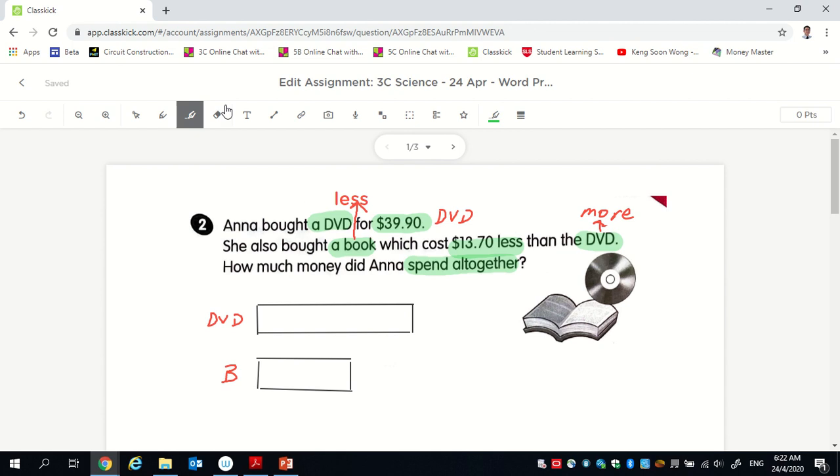So what do I want to find? I want to spend it all together. So it means I want to find total. I want to find the total. So basically this is what I want to find. The total.